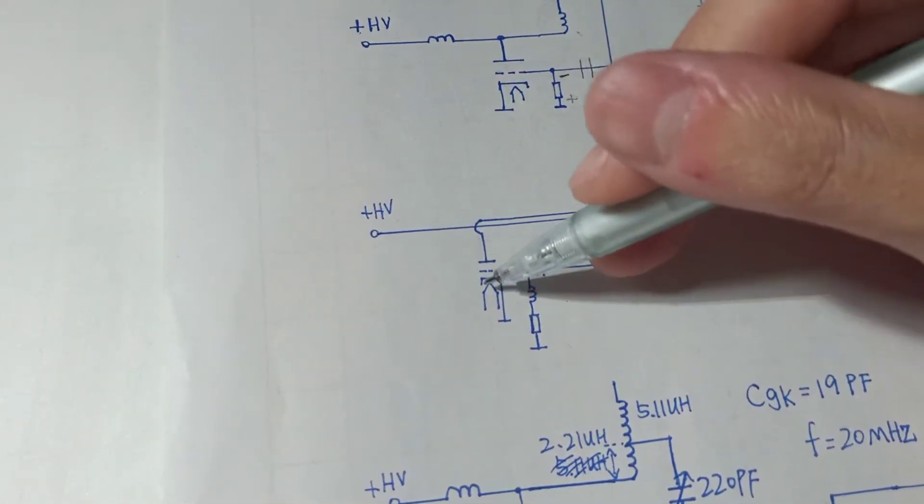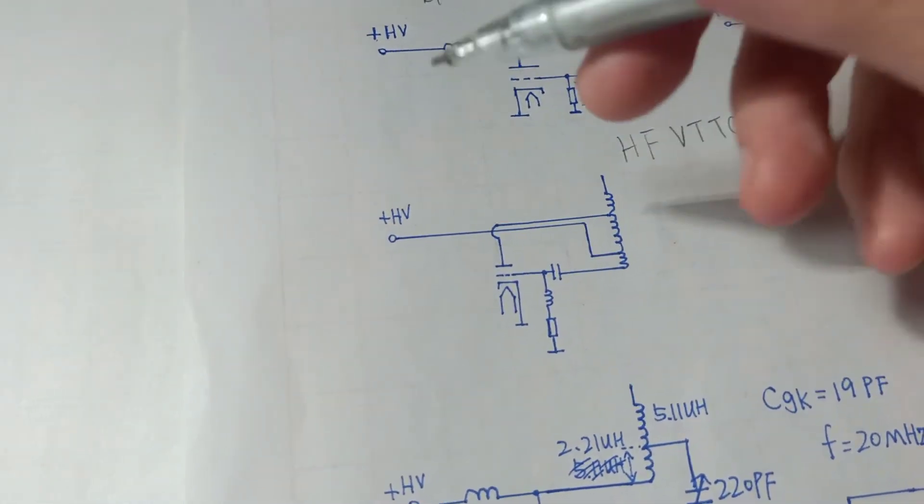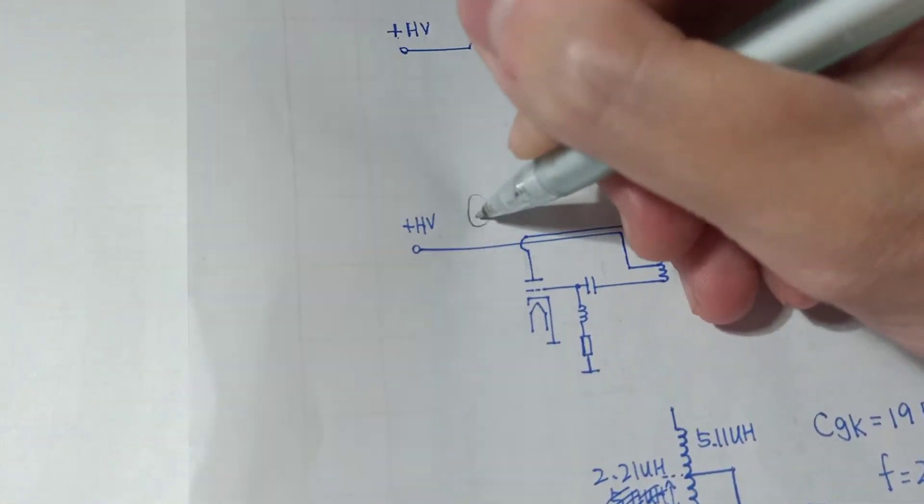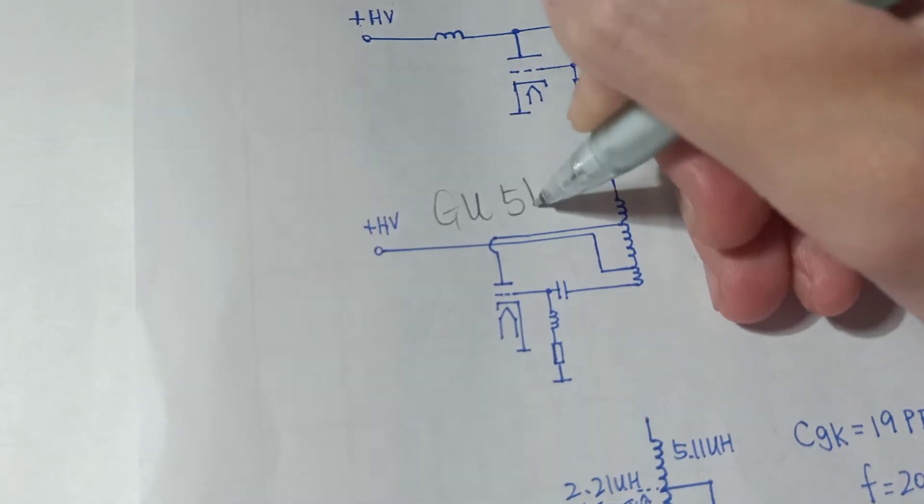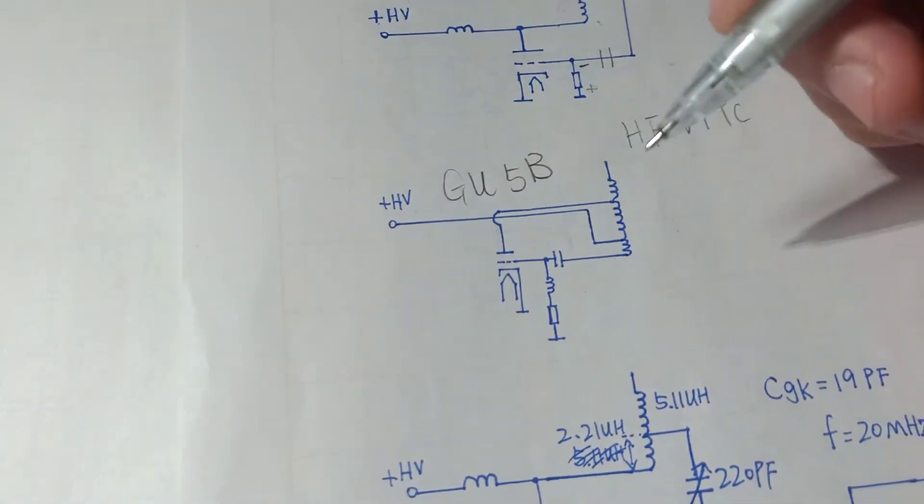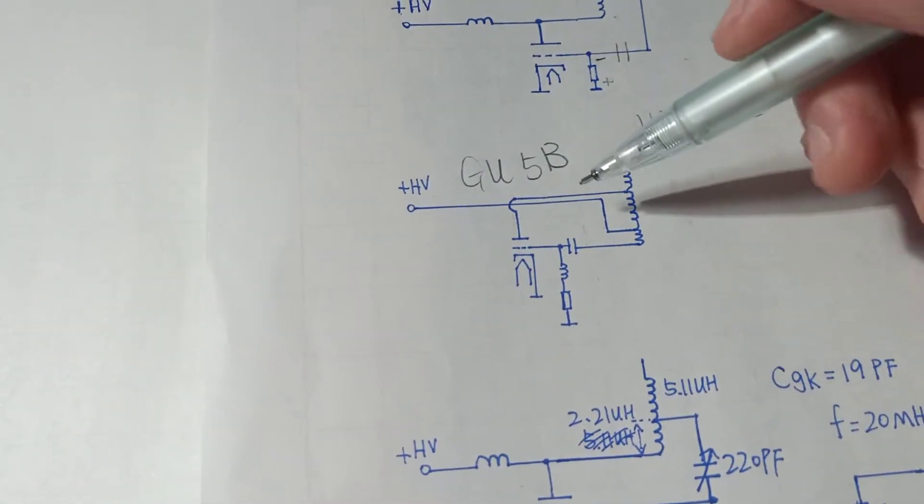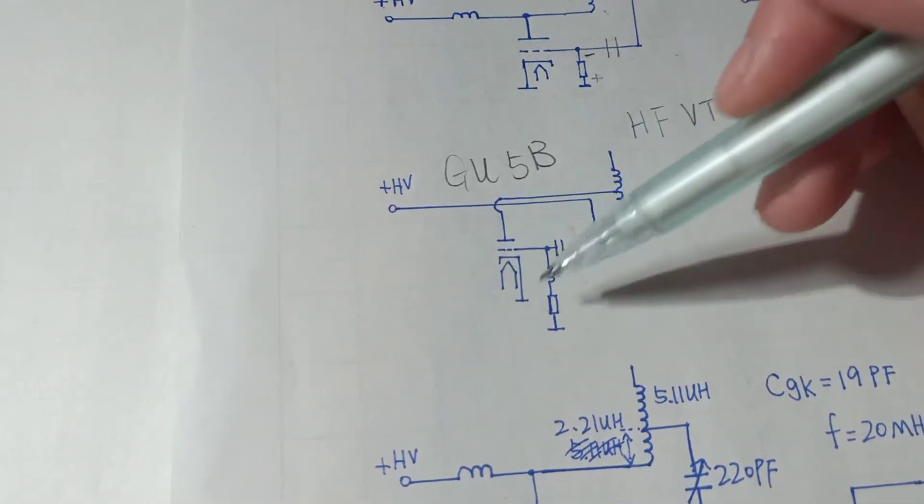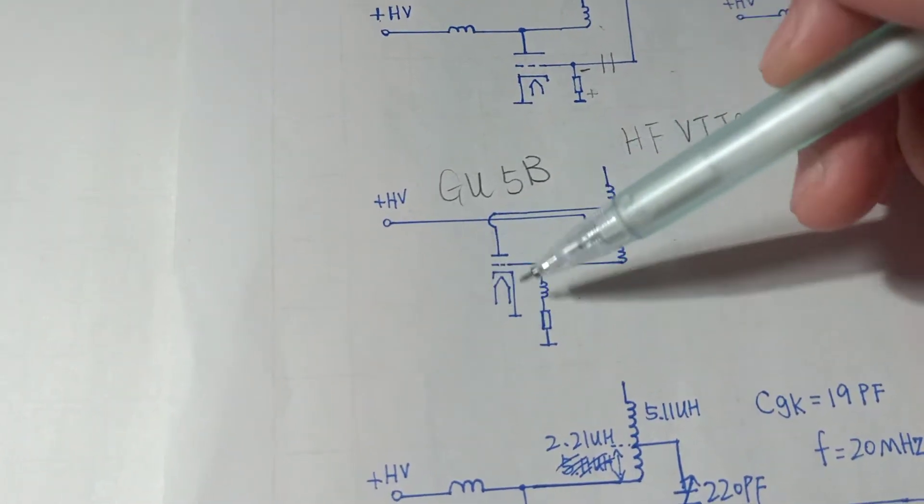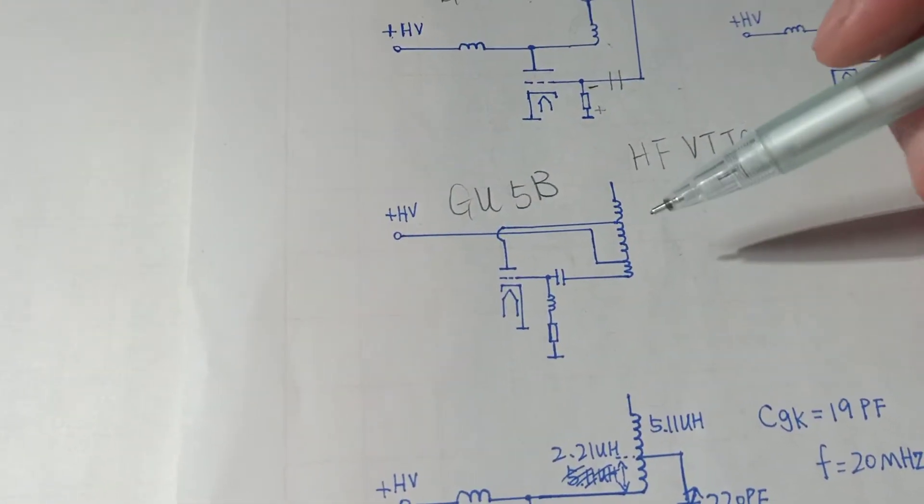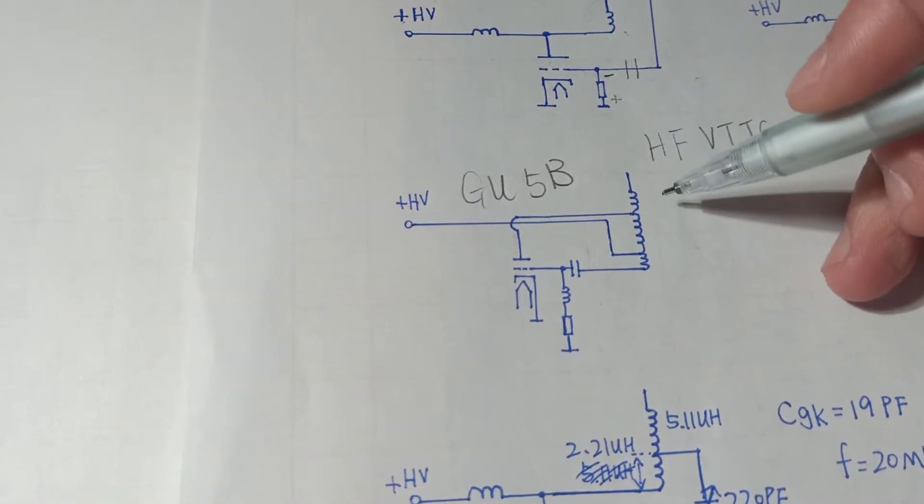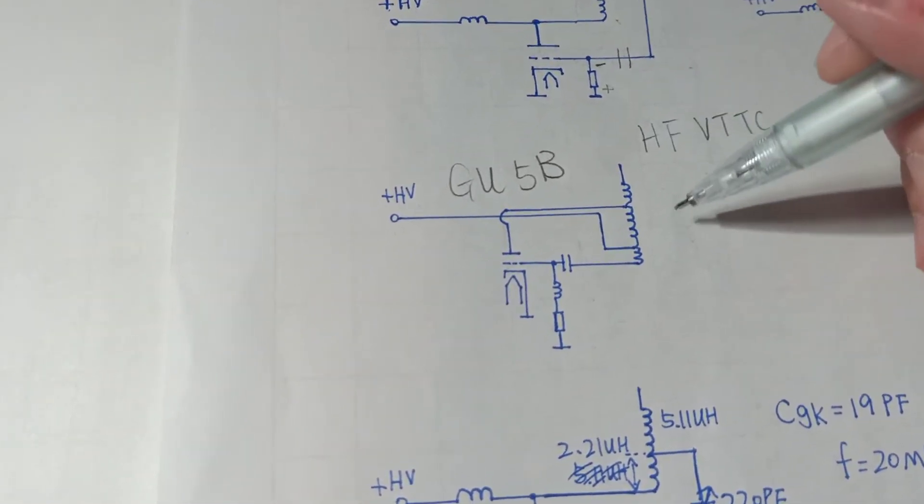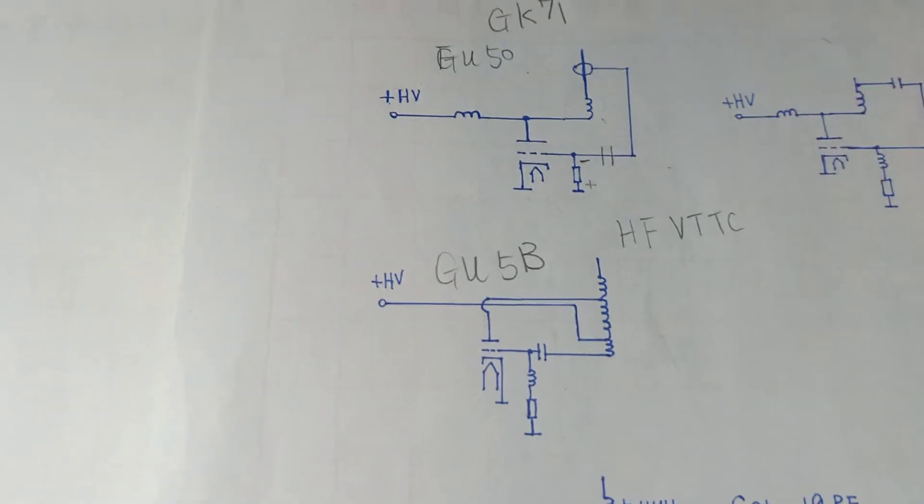And this circuit here, this tube is GU5B, a triode vacuum tube, a forced air-cooled vacuum tube. Maybe the plate dissipation around 3kW or 2.5kW, I don't remember that.